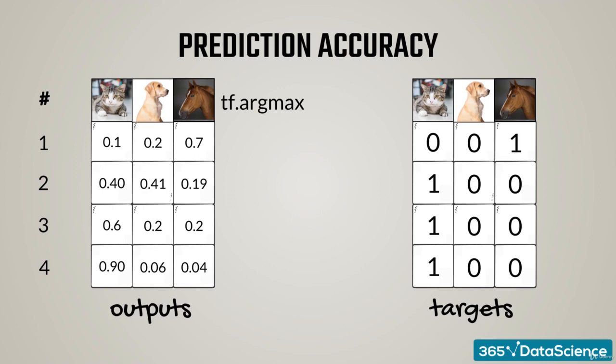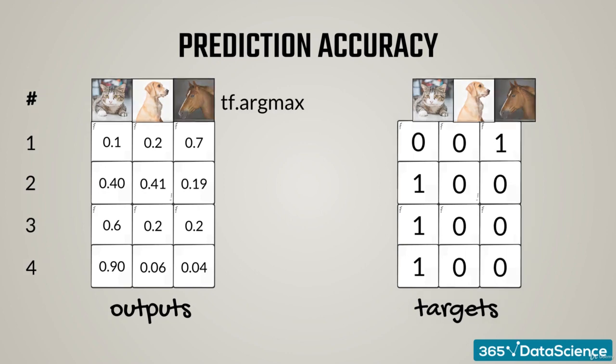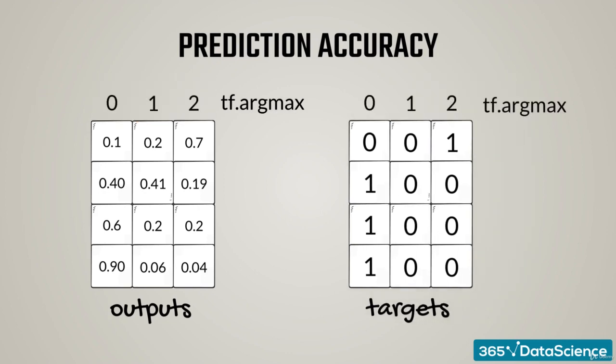As we know the first column is cat, the second one is dog, and third is horse, we can label them 1, 2, 3, or 0, 1, 2, as is the convention in computer science. tf.argmax can return just that, the index of the column in which we find the highest argument.